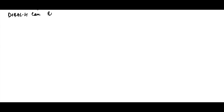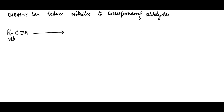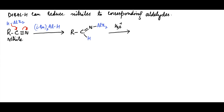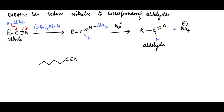DIBAL-H can reduce nitriles to the corresponding aldehydes. For example, a nitrile in the presence of DIBAL-H has a hydride anion added to the electrophilic carbon of the nitrile, forming the aluminium complex of the imine, which upon hydrolysis gives the aldehyde. A nitrile with an unsaturation in the carbon chain, upon treatment with DIBAL-H followed by hydrolysis, gives the corresponding aldehyde without affecting the carbon-carbon double bond.